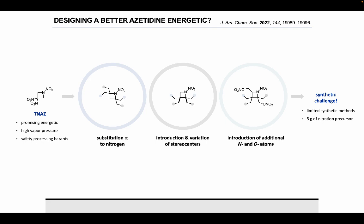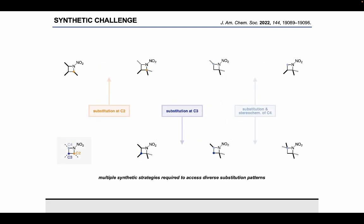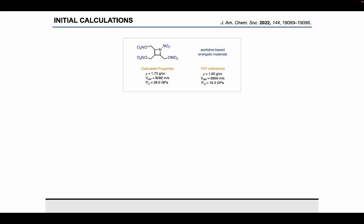While this looks great on paper, at the end of the day, this really is a synthetic challenge, simply due to the limited synthetic methods, and also our collaborators at the Army Research Lab were going to require approximately 5 grams of the nitration precursor so they'd have enough material to study the nitration and subsequent characterization. Here are the bare-bones scaffolds that we were interested in looking at, varying the substitution at each of the carbons, as well as looking at stereochemistry to see if that would alter the physical properties. If you tried to think about one method that could access all of these different substitution patterns, it's pretty unlikely, so we knew we would likely need to employ multiple synthetic strategies. Our collaborators were able to run some initial calculations on this completely symmetric nitroazetidine, in which the calculated properties seem to be very comparable or even better than TNT, which is the classic reference compound for the development of energetic materials.